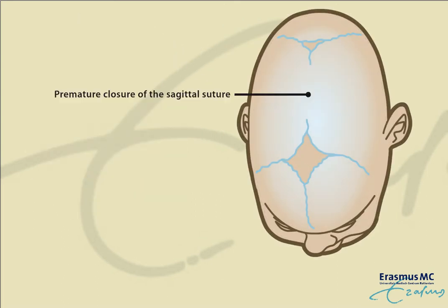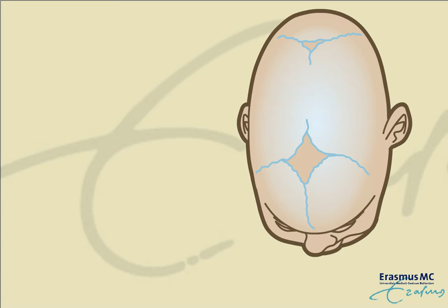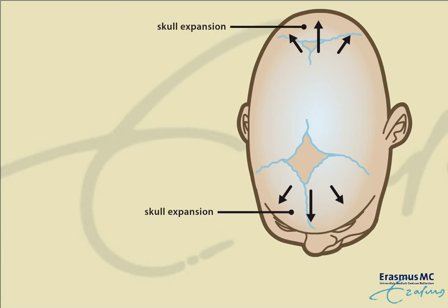Premature closure of the sagittal suture prohibits skull growth to the sides, resulting in an elongated, narrow skull shape. There is a risk for insufficient volume for the brain, and thus a skull expansion is indicated.